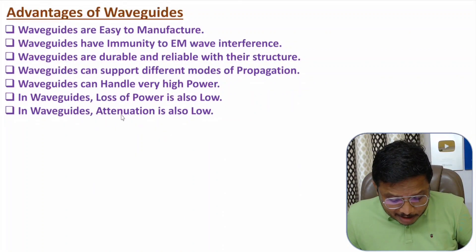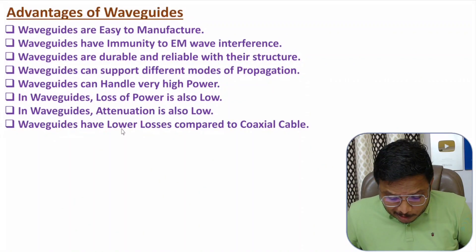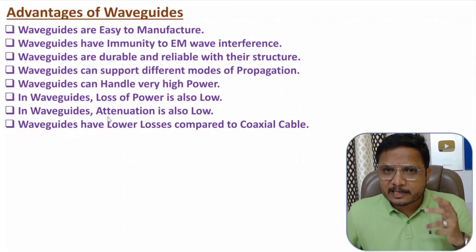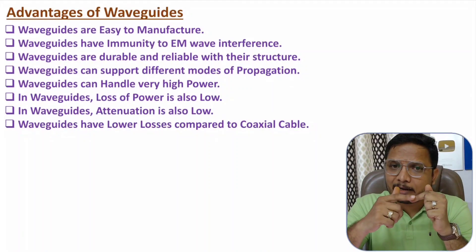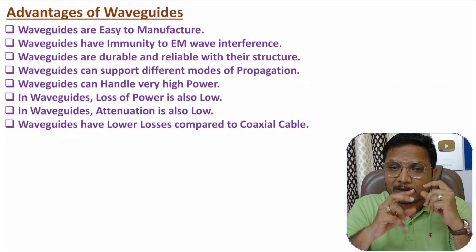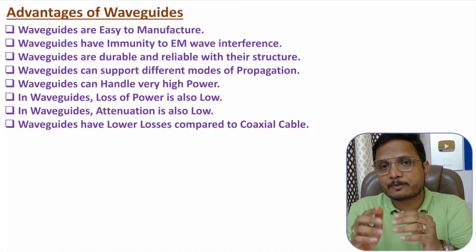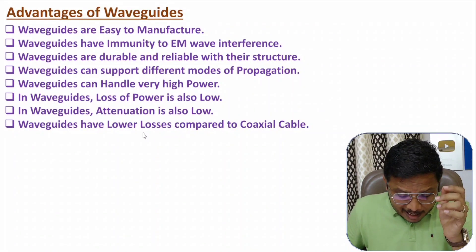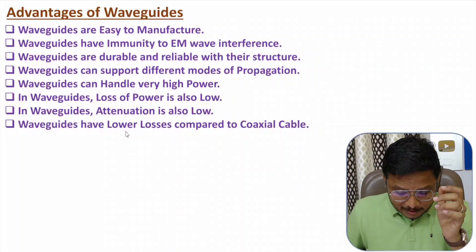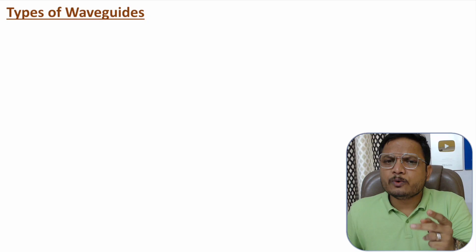Waveguides have lower losses compared to coaxial cable. With a coaxial cable we have an inner conductor and outer conductor separated by dielectric material, and that dielectric material has a loss tangent which causes attenuation of the signal. So coaxial cable has higher losses, whereas waveguides have lower losses. Now I'll discuss the types of waveguides.